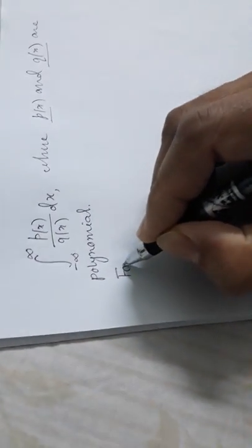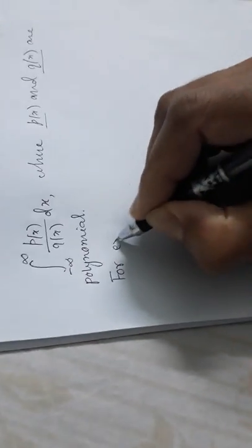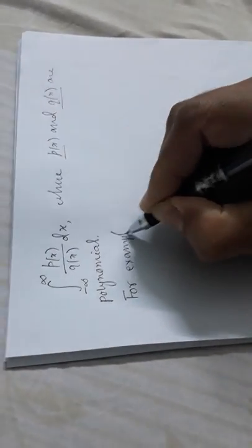For example, let us evaluate the integral from minus infinity to infinity of 1/(1 + x²) dx. Here our p(x) is 1 and q(x) is 1 + x².